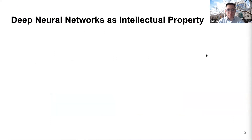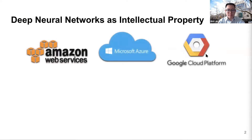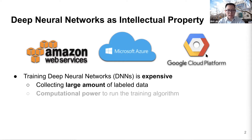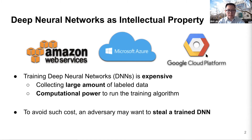Deep neural networks are very successful in recent years, and as you may have noticed, some companies including Amazon, Microsoft, and Google are providing access to query trained neural networks as a service. Neural networks are important intellectual property because training data is expensive to collect and state-of-the-art models are expensive to design and costly to train. To avoid such cost, an adversary may want to steal a trained model from someone else, since they can use a stolen copy for profit or as a reconnaissance step towards attacking the black box model — for instance, with adversarial examples.